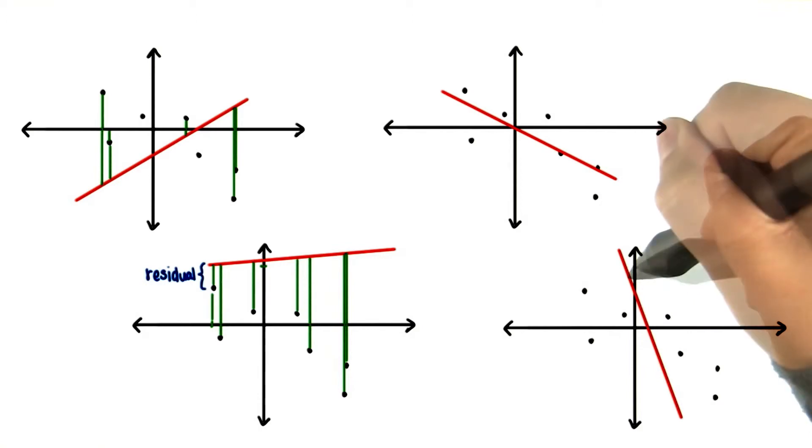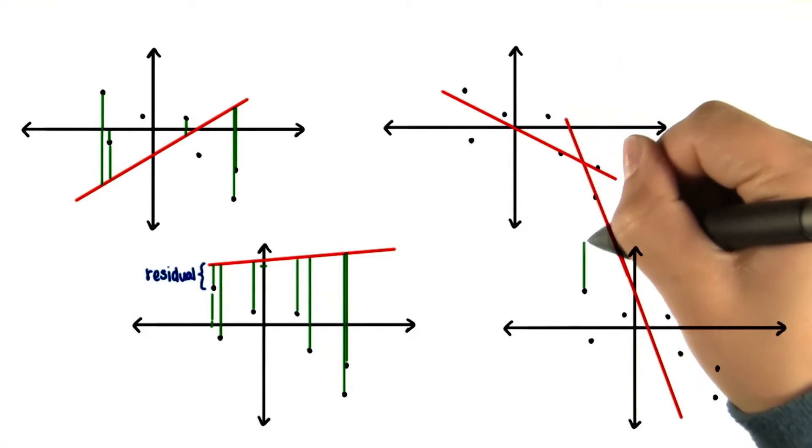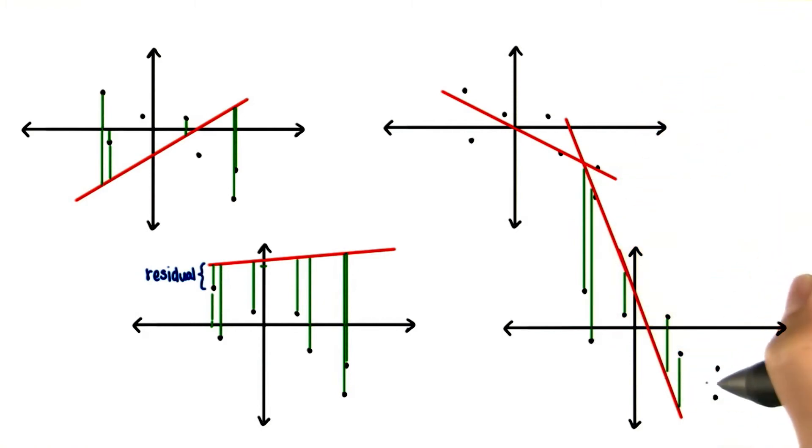Same with this one. If we continued this line really far out, the residual for this data value would be huge. All of them would be pretty big. And these would be really big.